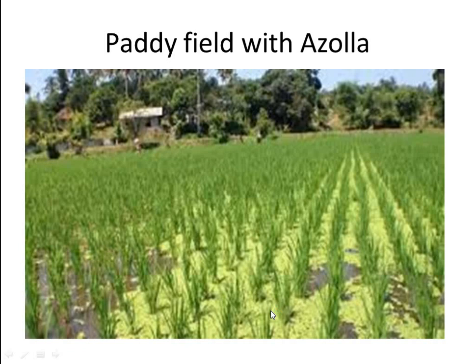Another important source of available nitrogen in flooded rice fields is the water fern Azolla, which associates with the cyanobacterium Anabaena. The Azolla-Anabaena association can fix as much as half a kilogram of atmospheric nitrogen per hectare per day, a rate of fertilization sufficient to attain moderate rice yields. Free living bacteria capable of fixing nitrogen may be aerobic, facultative, or anaerobic.